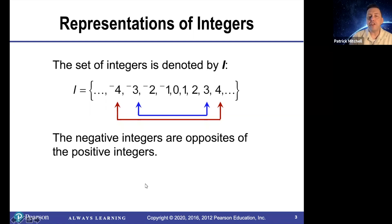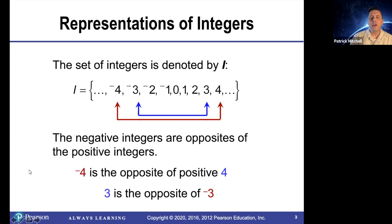The negative integers are opposites of the positive integers. For example, negative 4 is the opposite of positive 4, and 3 is the opposite of negative 3.